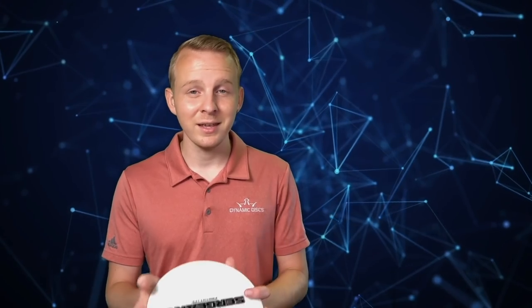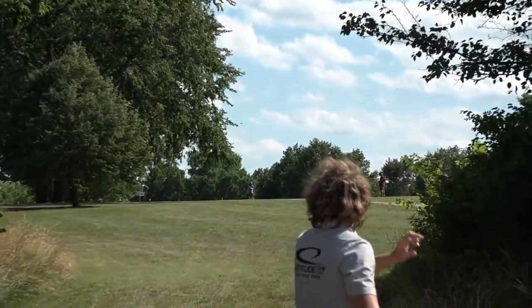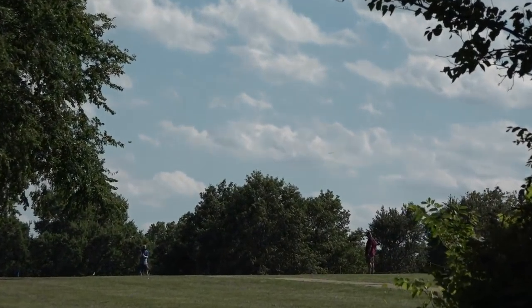So if I usually throw a disc at about 50 miles an hour and I have a 10 mile an hour headwind, the disc is going to think that it's flying at 60 miles an hour. And vice versa for tailwinds. If I usually throw a disc at 50 miles an hour and I have a 10 mile an hour tailwind, the disc is going to fly like I threw it at 40 miles an hour. So one way that it's helpful to change your shot selection is to disc down in a tailwind and throw the same shot.